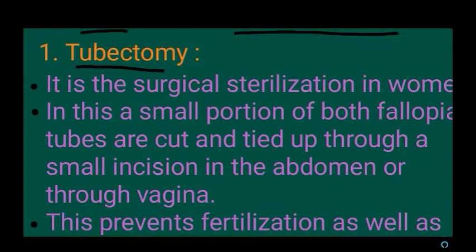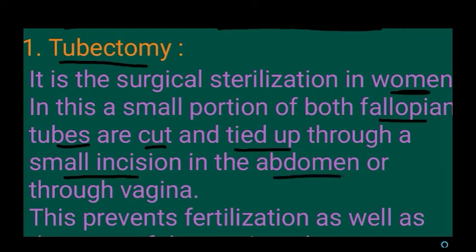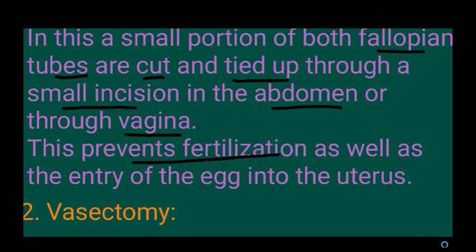Tubectomy is surgical sterilization in women. A small portion of both fallopian tubes is cut and tied up, performed by making a small incision in the abdomen or through the vagina. This prevents fertilization and the entry of the egg into the uterus — since the fallopian tubes are cut and tied, the egg cannot move toward the uterus and the sperm cannot reach the egg.